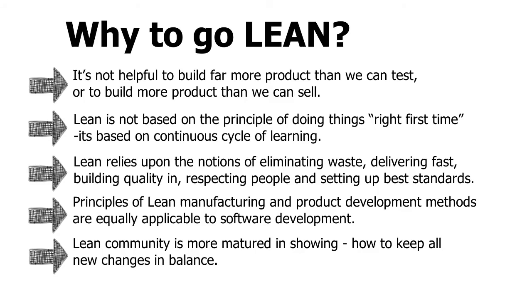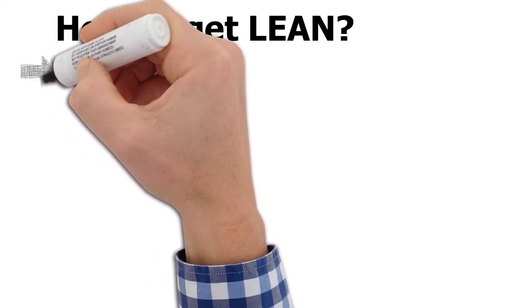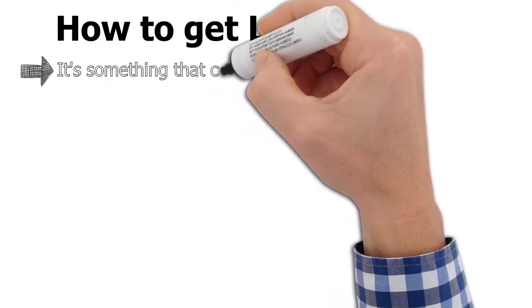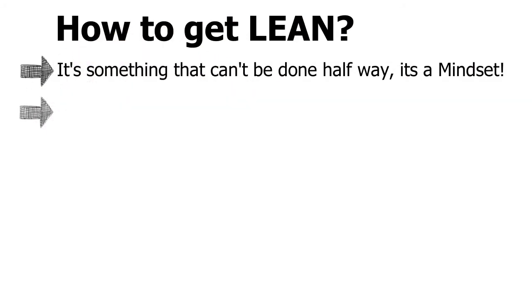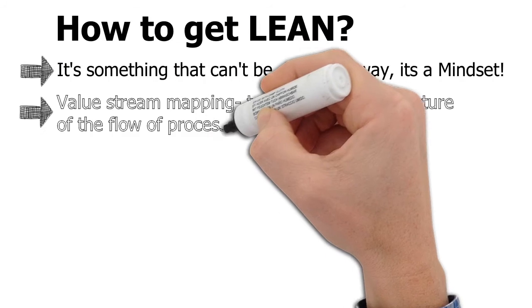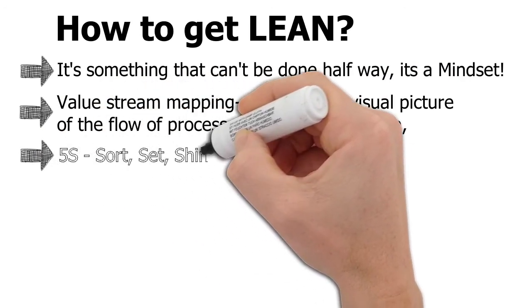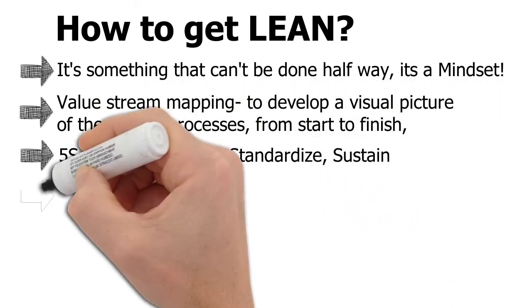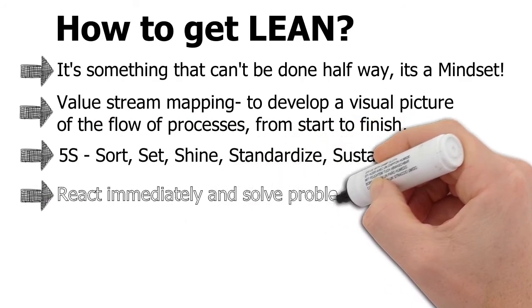Now let's look at how to get lean. Lean is something that cannot be done halfway — it's a mindset. Second, you need to create a value stream mapping, which means developing a visual picture of all processes from start to finish. Third is the 5S system, which includes sorting, setting, shining, standardizing, and sustaining the complete process and product — I'll explain these in my upcoming video.